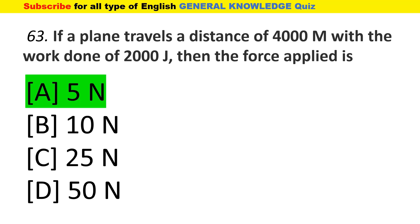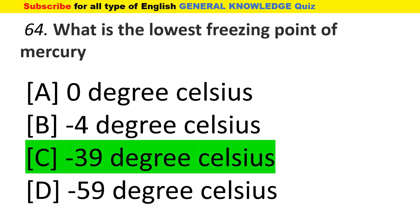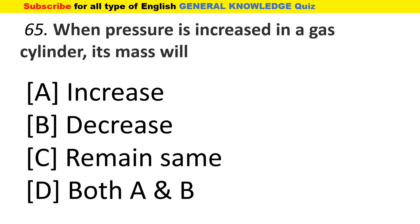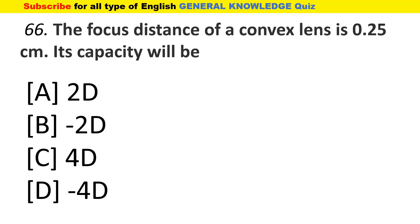The lowest freezing point of mercury is minus 39 degrees Celsius. When pressure is increased in a gas cylinder, its mass will remain the same. The focal distance of a convex lens is 0.25 cm — its power will be 4 diopters. If you like the video, don't forget to like, subscribe, and share.